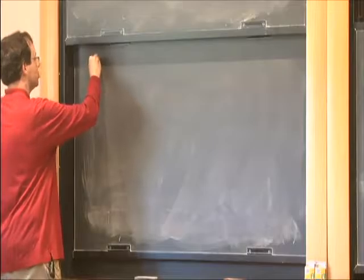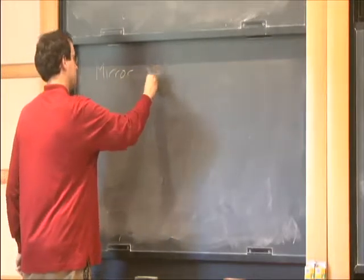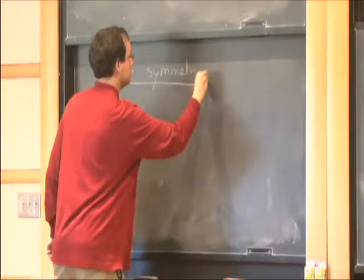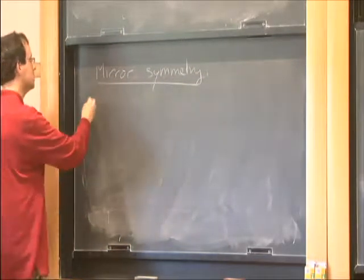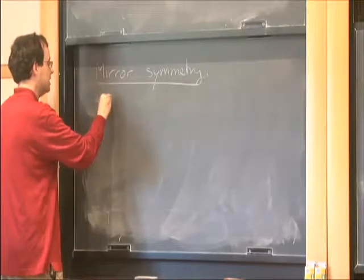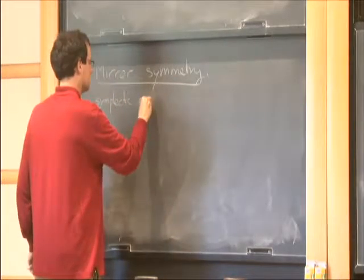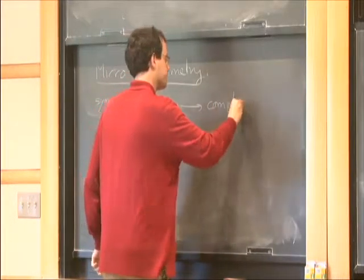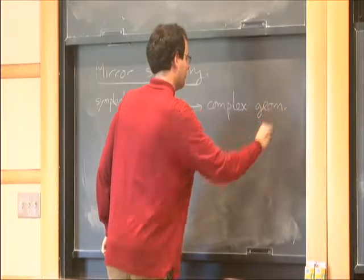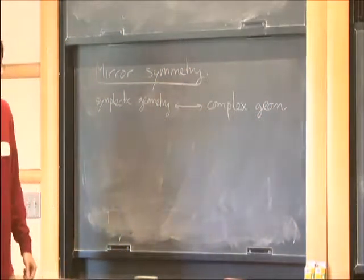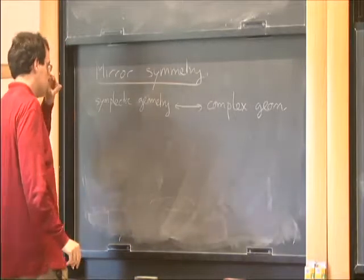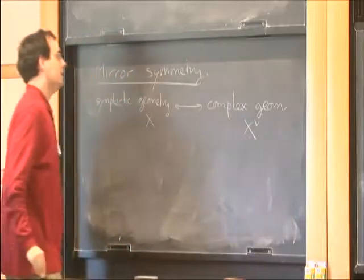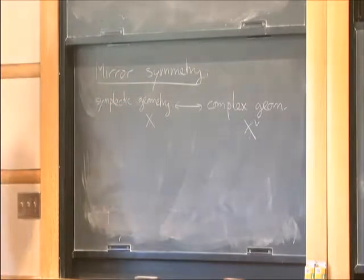For non-experts: what is mirror symmetry? Very broadly speaking, it's a connection — some relation between pairs of spaces. You're supposed to be able to relate the symplectic geometry of one space with the complex geometry of another one, which is going to be called its mirror. Let's call this space X, this space X dual. There are two main instances, two main ways in which we have such a thing.